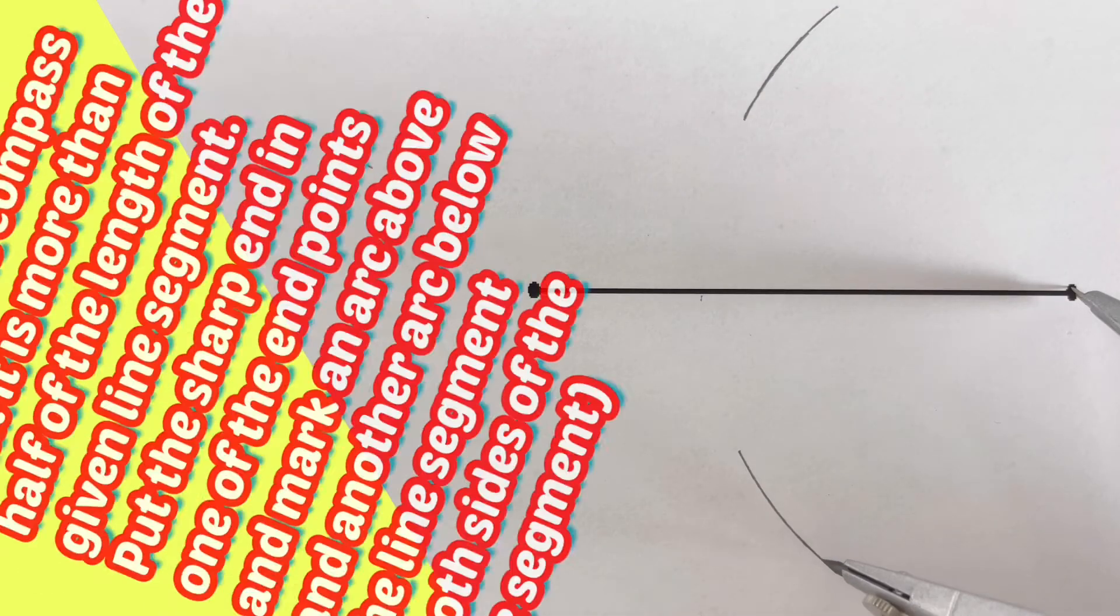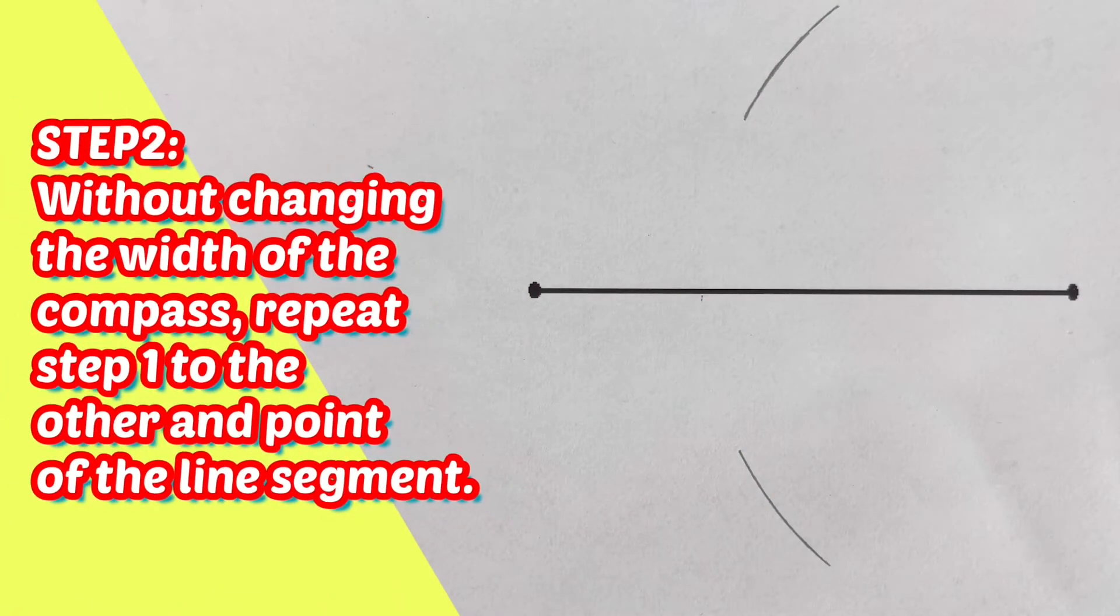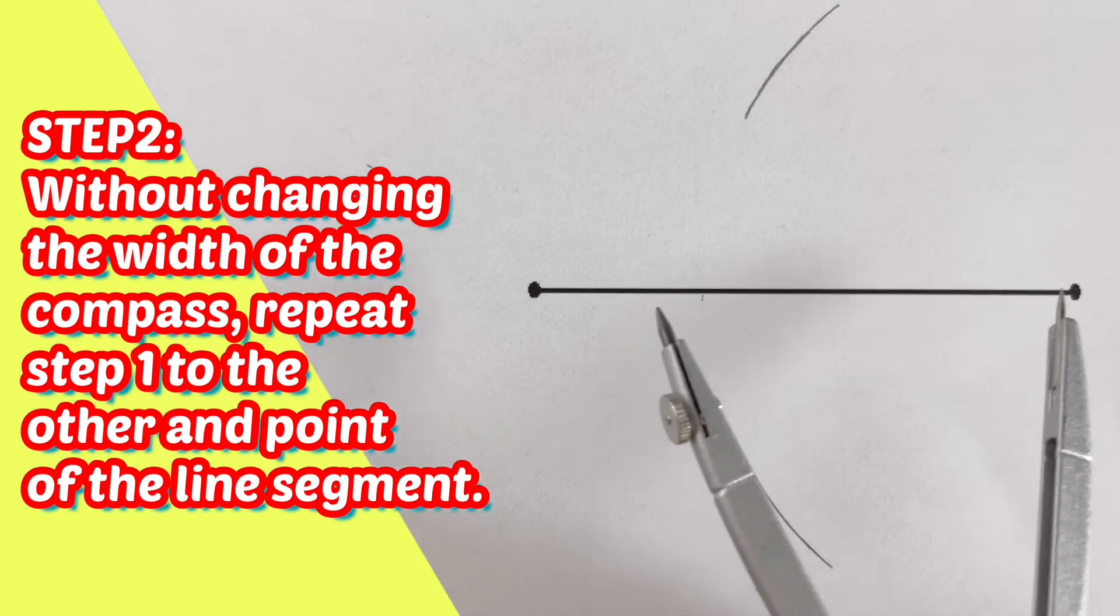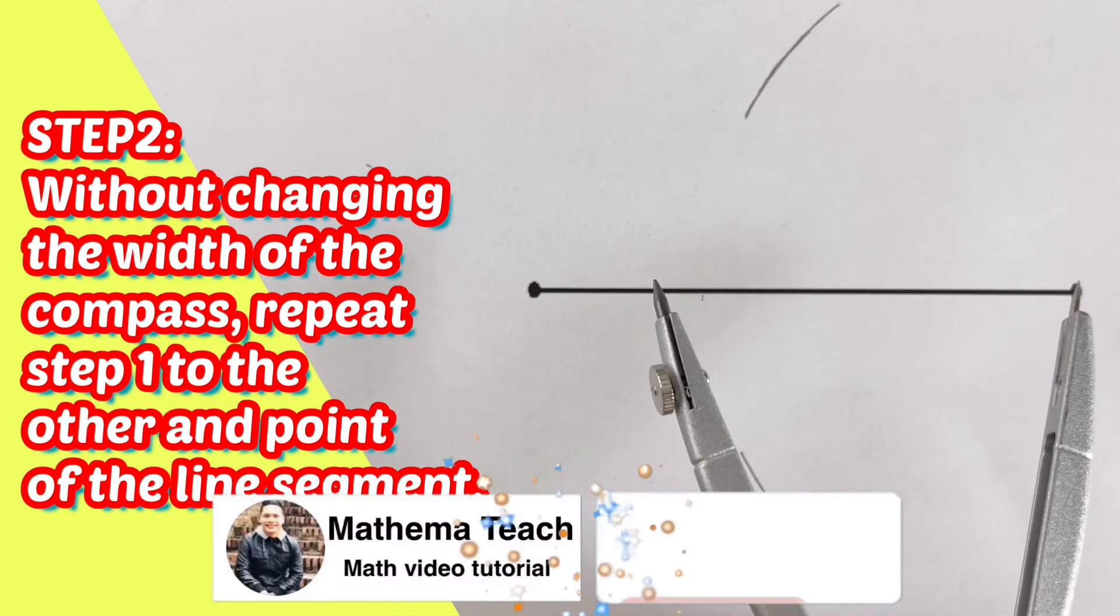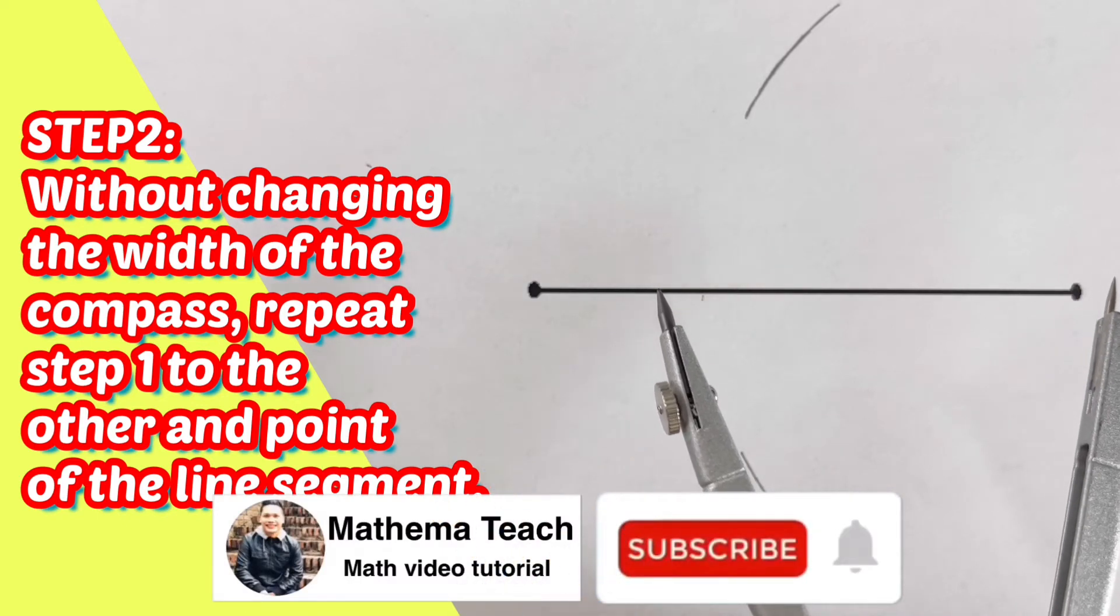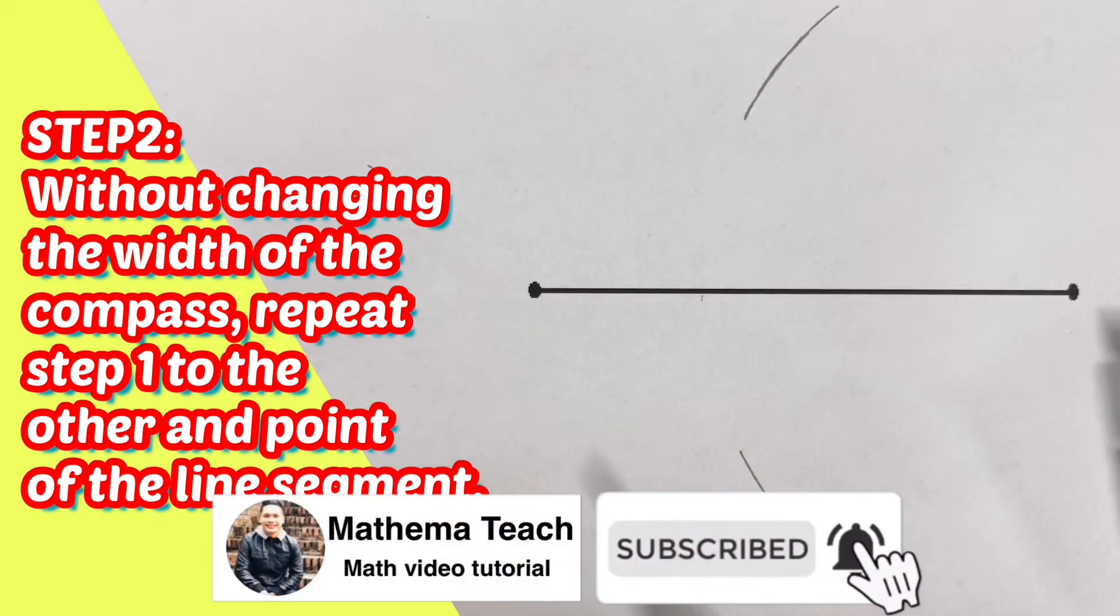Now let's move on to the second step. The second step states that without changing the width of the compass, I'm not going to change this, we are supposed to repeat step one to the other end of the line segment.